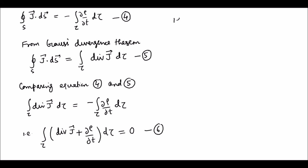Now since this equation six is true for any arbitrary finite volume, this integrand must vanish. That is, divergence J plus d rho/dt should be equal to zero. Let this be equation number seven. This equation can be written as del dot J plus d rho/dt equal to zero. This equation seven is called the equation of continuity.